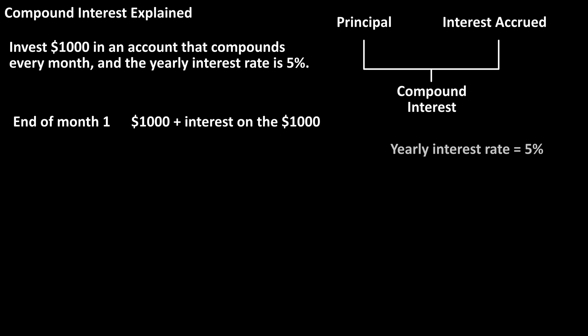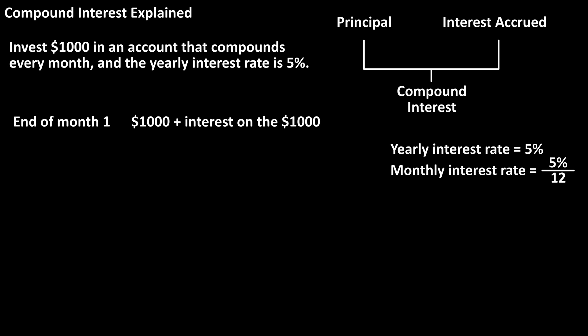Since the yearly interest rate is 5%, we must calculate the monthly interest rate, and we do this by dividing the 5% yearly rate by the number of months in a year, 12. We first have to convert the 5% to a decimal, and we do this by dropping the percent sign and moving the decimal two places to the left to get .05. Now we have .05 over 12, which calculates to .004167 rounded off.